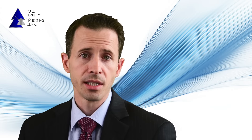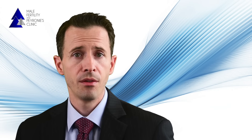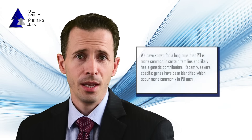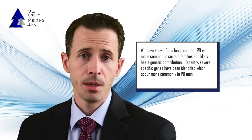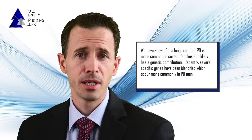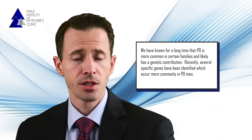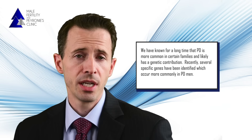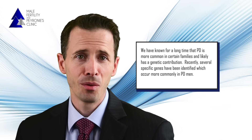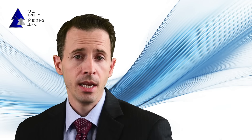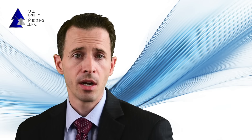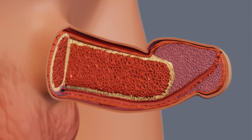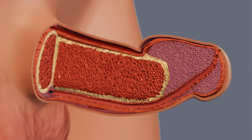A second potential cause of Peyronie's disease is related to the development of a benign tumor. We've known for some time that Peyronie's disease is more common in certain families and likely has a genetic contribution. More recently, several specific genes have been identified which occur more commonly in men with Peyronie's disease, and there's a fair amount of research going into this area. With this theory, something occurs to cause the body to begin developing a tumor in the tunica albuginea of the penis.